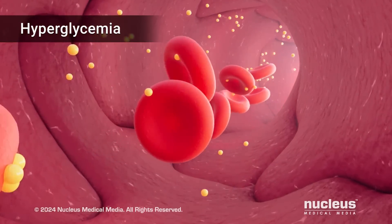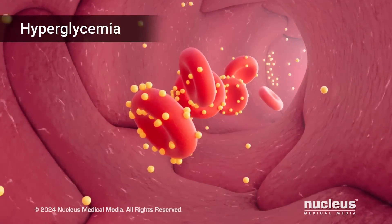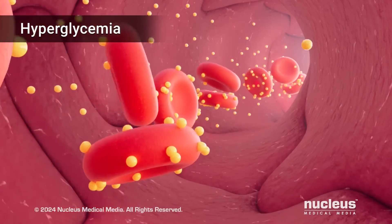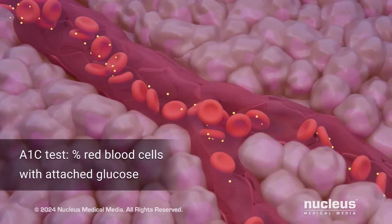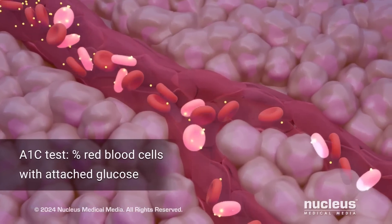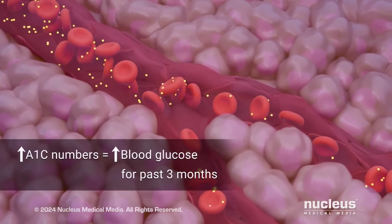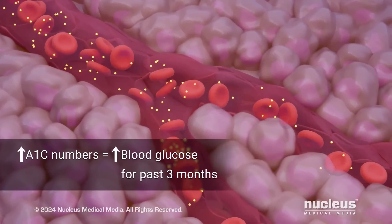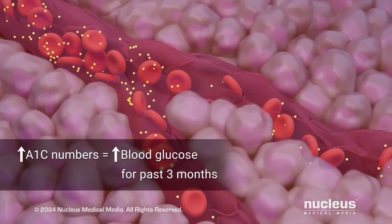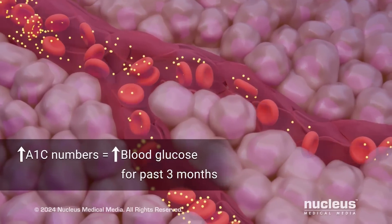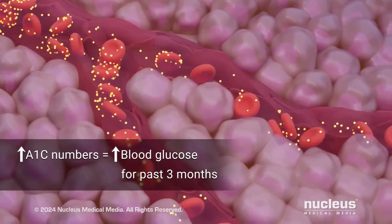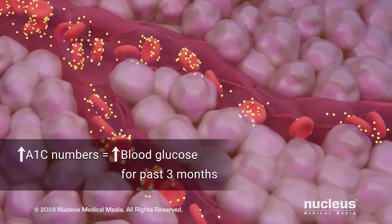If you have high blood glucose, more of the hemoglobin in your red blood cells will have glucose stuck to it. An A1c test shows the percentage of red blood cells that have glucose attached to them. If your A1c numbers are higher, it means that your red blood cells were exposed to higher levels of blood glucose in the previous three months. The test shows results from this time period because glucose can only stick to hemoglobin while your red blood cells are alive, and they live for about three months.